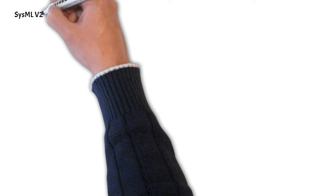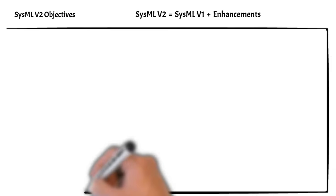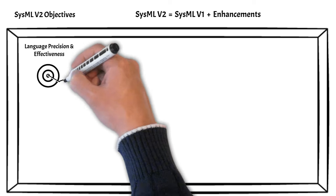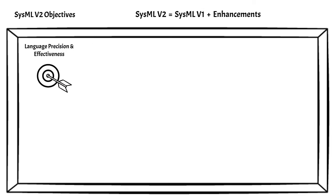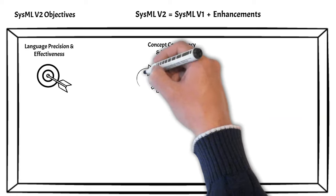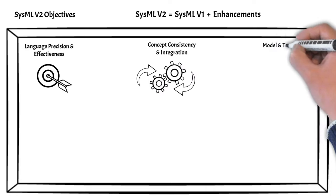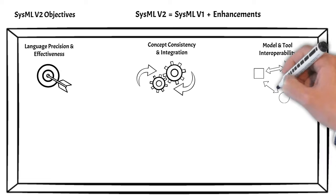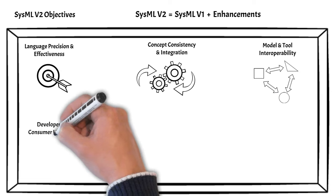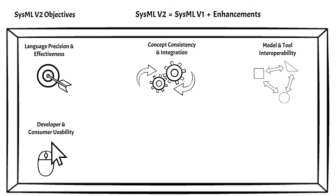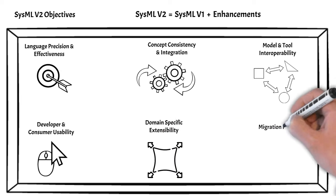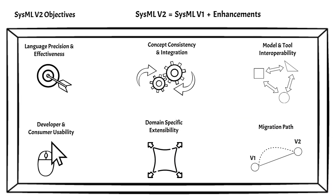The goal of SysMLv2 is to increase adoption and effectiveness of MBSE by making enhancements to SysMLv1. This includes improved precision and expressiveness of the language, upgraded consistency and integration among language concepts, augmented interoperability with other engineering models and tools, modernized usability by model developers and consumers, enriched extensibility to support domain-specific applications, and a migration path for SysMLv1 practitioners.